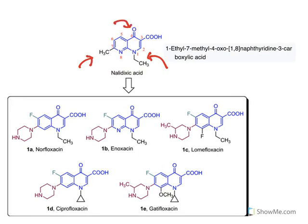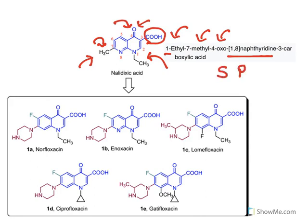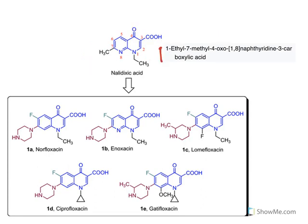All these substitutions are arranged alphabetically. First comes ethyl, then methyl, then oxo. At position 1, ethyl is present; at position 7, methyl is present; at position 4, oxo group is present. The parent ring is 1,8-naphthyridine, and the functional group is carboxylic acid. So, when you follow the order — substitutions first, then parent ring, then functional group — the IUPAC name becomes: 1-ethyl, 7-methyl, 4-oxo, 1,8-naphthyridine, 3-carboxylic acid.